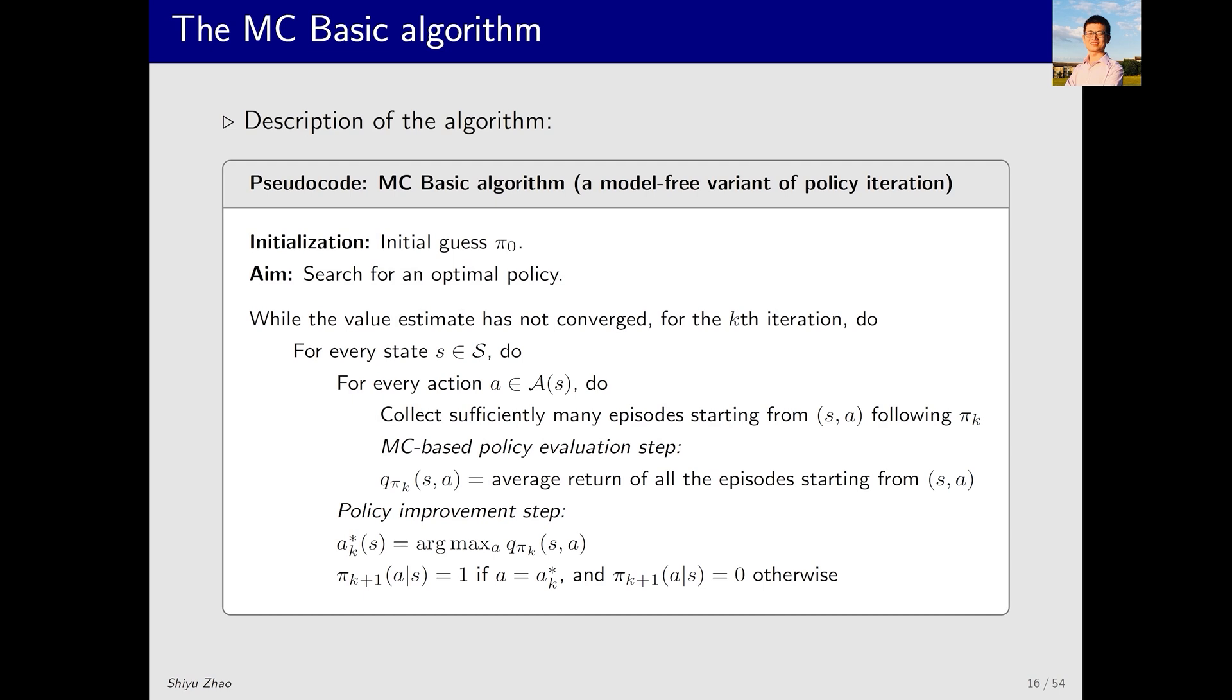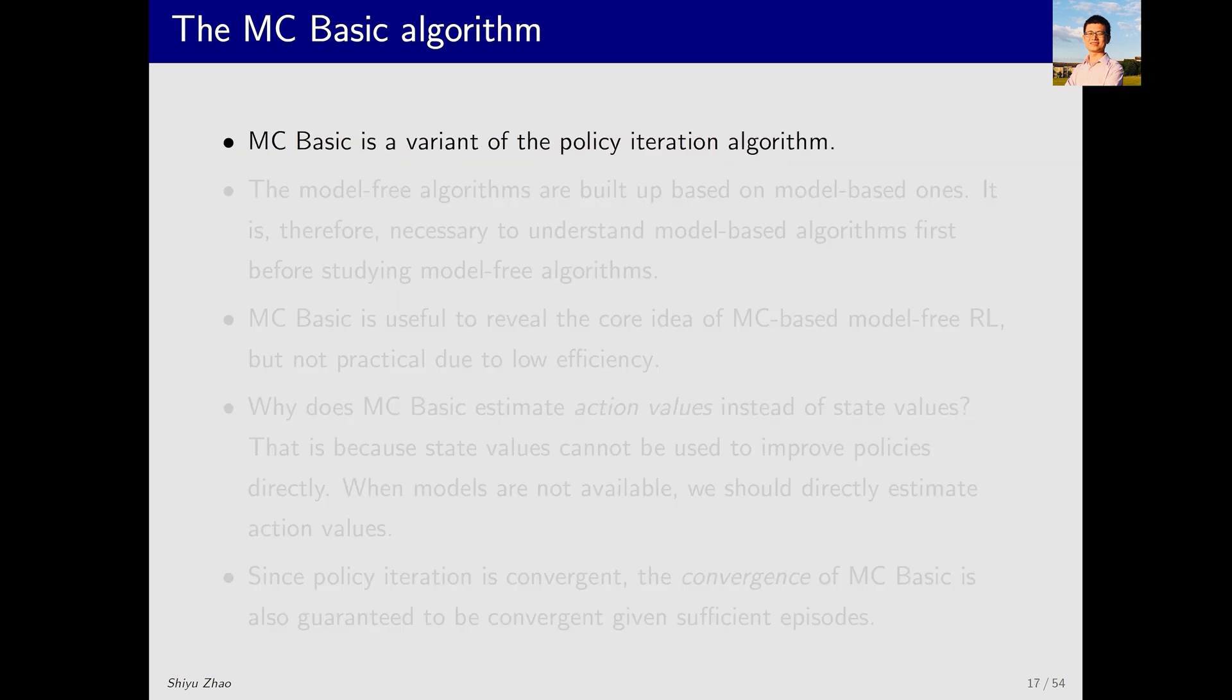Here's a pseudocode, which is very similar to the policy iteration algorithm. First, in each iteration, I need to go through every state s. Then, I need to go through all the actions corresponding to each state s. What do we do next? Starting from s,a, we collect sufficiently many episodes and compute their average return, which is an estimate of q pi k(s,a). Then, in the next step, we improve the policy simply by selecting the action with the maximum action value. By now, we've completed the introduction of MCBasic. Next, we see some examples. But before that, I want to emphasize a few points.